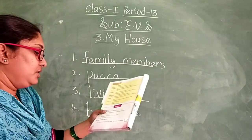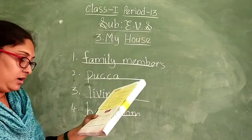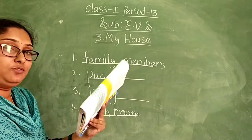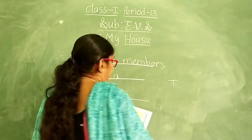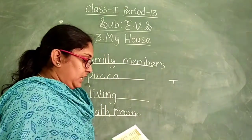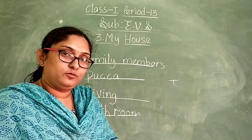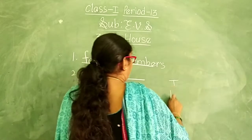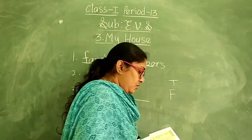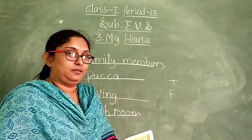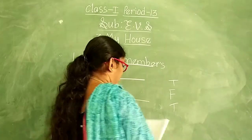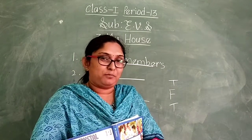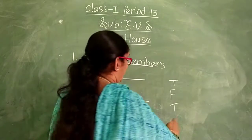True or false. True means correct, false means wrong. Our house protects us from heat, rain, cold and thieves — true. Second: we keep a bed in a living room — no, so it is false. We should keep our house clean — true. We play games in the bathroom — no, so it is false.